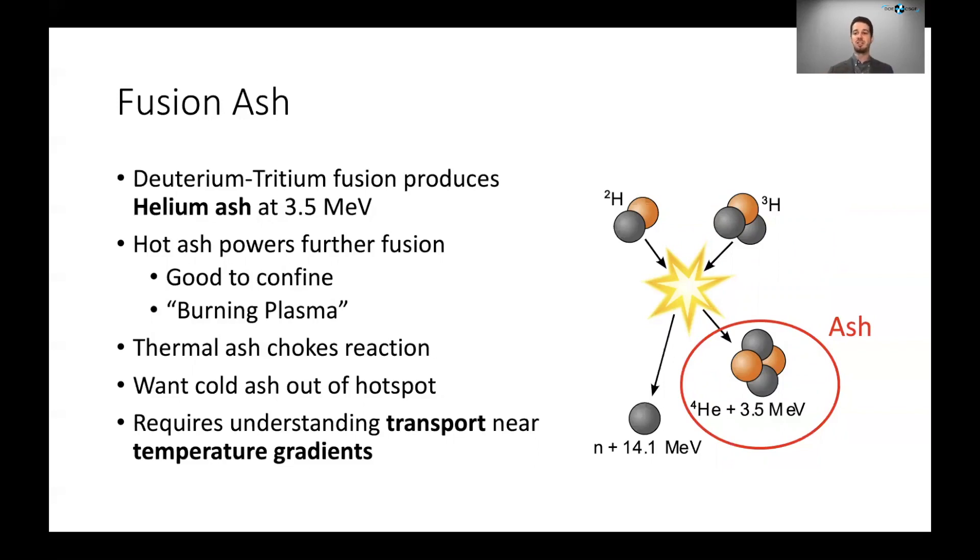Now initially this confinement is good because you want to harness that 3.5 MeV that the alpha particle is producing in order to drive further fusion. This is what's known as a burning plasma, where the fusion is sustained by the energy it's producing from its own fusion reaction in the form of those really high energy helium atoms.